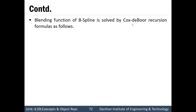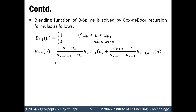The blending function of a B-spline is solved by the Cox-de Boor recursion formula. Bk,1(u) equals 1 if u is in the interval from uk to uk plus 1, and 0 otherwise. The recursive formula is: Bk,d(u) equals (u minus uk) divided by (uk+d-1 minus uk) times Bk,d-1(u), plus (uk+d minus u) divided by (uk+d minus uk+1) times Bk+1,d-1(u). We put values from the base case and reverse-calculate to finally obtain Bk,d(u) using the Cox-de Boor recursion formula.